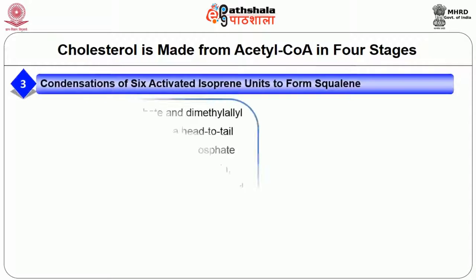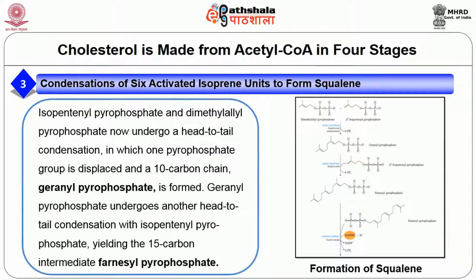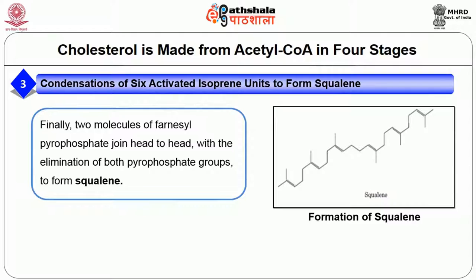Stage three: condensation of six activated isoprene units to form squalene. Isopentenyl pyrophosphate and dimethylallyl pyrophosphate undergo head-to-tail condensation in which one pyrophosphate group is displaced, forming the 10-carbon chain geranyl pyrophosphate. Geranyl pyrophosphate undergoes another head-to-tail condensation with isopentenyl pyrophosphate, yielding the 15-carbon intermediate farnesyl pyrophosphate. Finally, two molecules of farnesyl pyrophosphate join head-to-head with the elimination of both pyrophosphate groups to form the 30-carbon squalene.